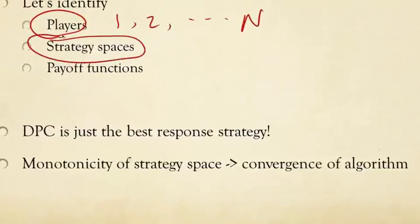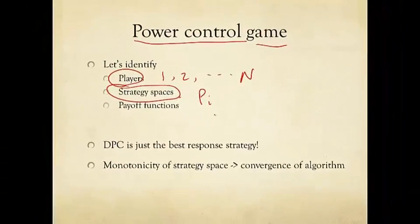Let's identify the strategy space here. It becomes a little more complicated. In the two examples we just saw, the strategy space is pretty simple - just two choices. But here is a continuum of power levels for each user i, such that the target SIR gamma is achieved.